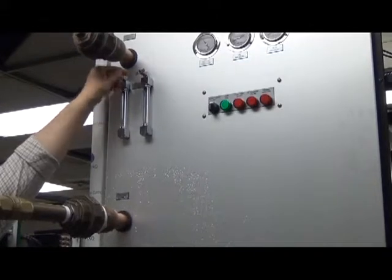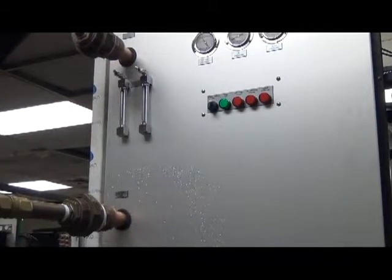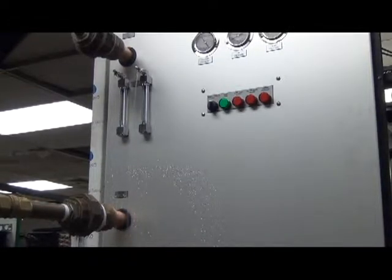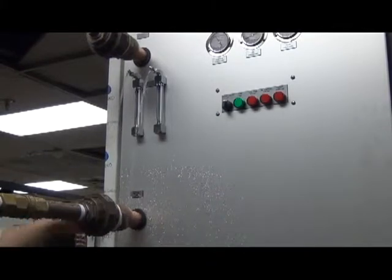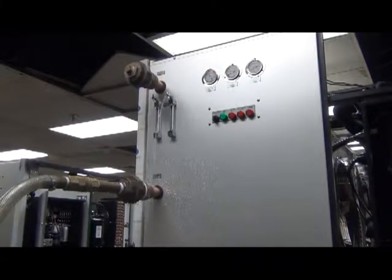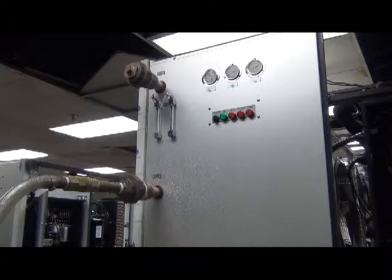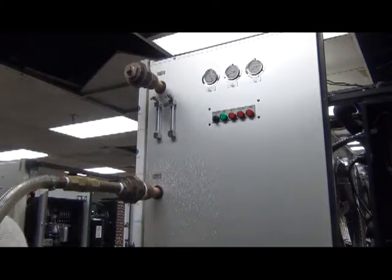Before you begin filling the chiller, you want to open these about a quarter of a turn. That will release any air that's in the system as it's being filled. And then you want to open your water supply and begin filling the chiller. And when you get water coming from the air vents, you'll have some air coming out as well. You want to make sure that all the air gets out. And then you can close these and turn off your water supply.